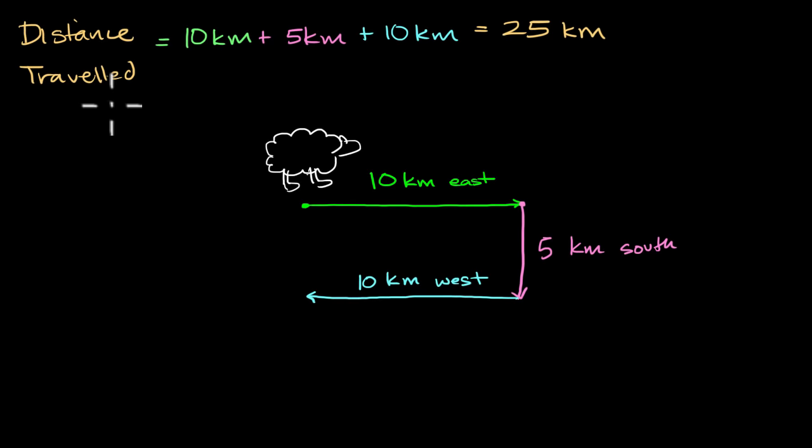Now some of you might have said, wait, hold on a second. The sheep was here before, and then it ends up right over here at the end of its journey. And so its change in position is it would have moved a net five kilometers south.